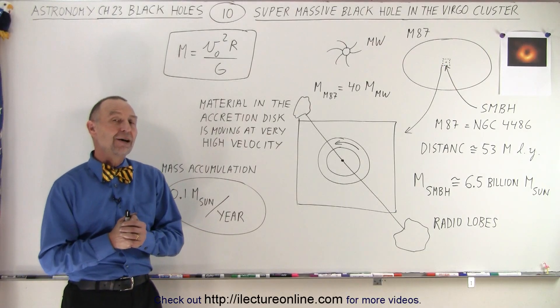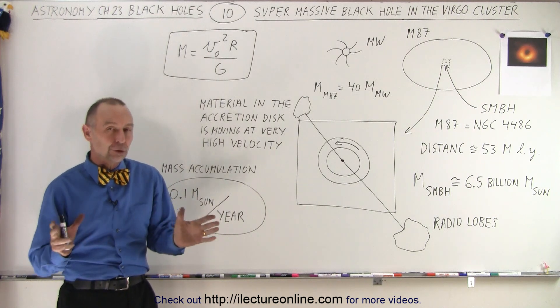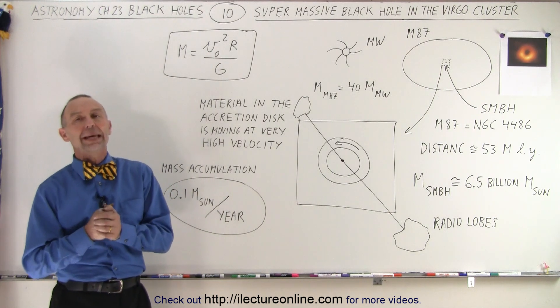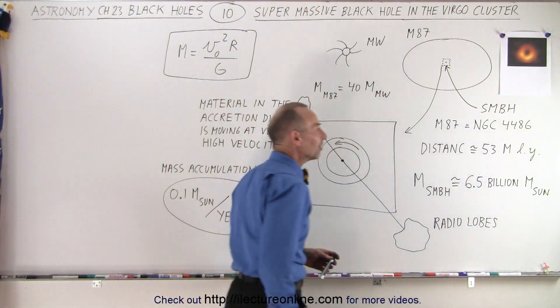Welcome to ElectronLine and now for the real big one. It turns out there is a galaxy in the Virgo cluster known as M87 and the lesser known NGC assignment of 4486.